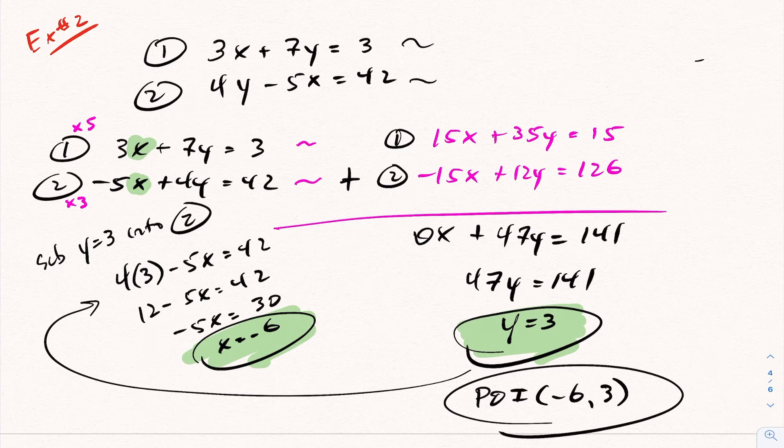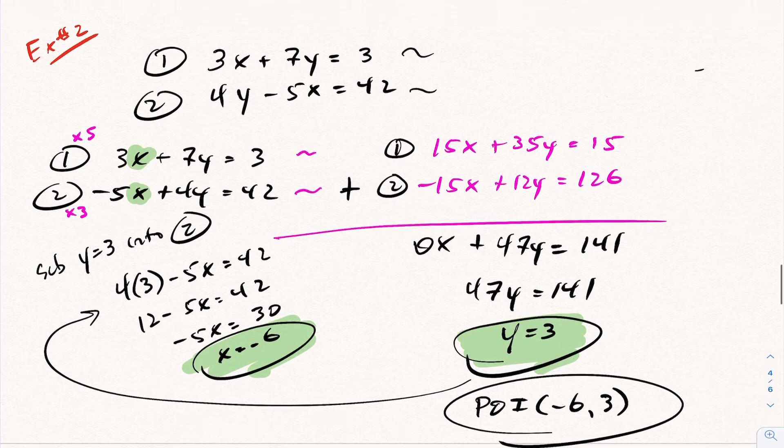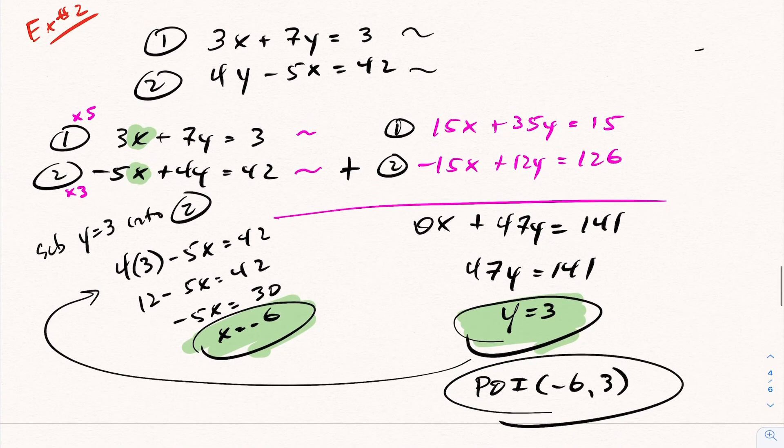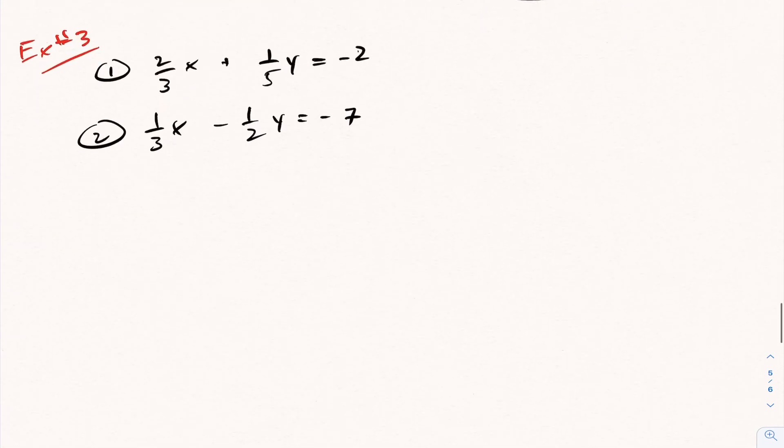So this is an example of solving using elimination where you have to actually multiply both equations to get that common coefficient. Now notice here I could have multiplied across by a negative 3 and given me a positive 15, and then the operation, if you do that strategy, the operation is always subtraction every time if you make the coefficients exactly the same. If you force a positive 15 out of this, it'll always be subtraction. Let's take a look at example 3.